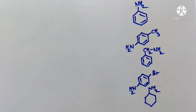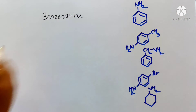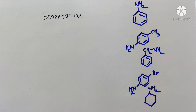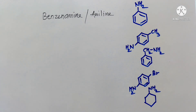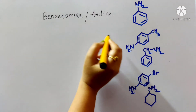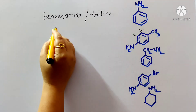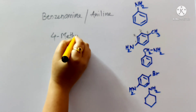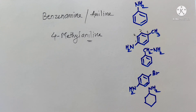When an amino group is attached to benzene, the 'e' of benzene is replaced by 'amine,' giving benzenamine — also commonly called aniline. When a methyl group is additionally attached at the fourth position of aniline, the compound is named 4-methylaniline, or equivalently 4-methylbenzenamine.